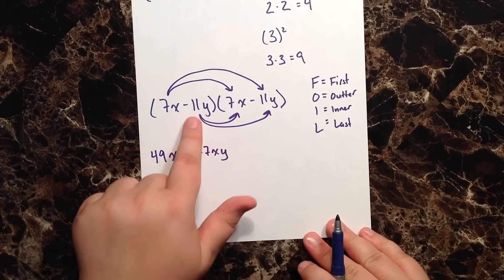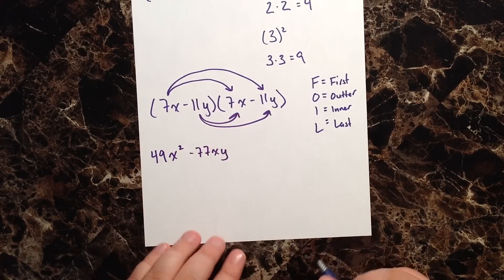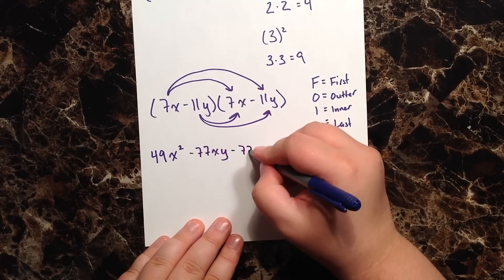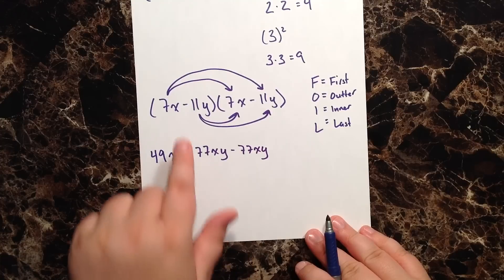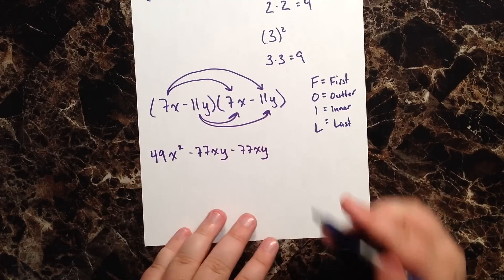-11y times positive 7x, well again that's -77xy. And then lastly, -11y times -11y, well that's just a positive 121y².